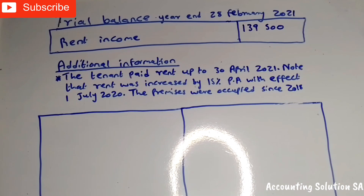Is that allowed under the income statement? No — we have to go to the income statement and subtract the amount for April 2021. But the question is: how are we going to get this amount? As we proceed, they say note that the rent was increased by 15% per annum with effect from 1 July 2020.